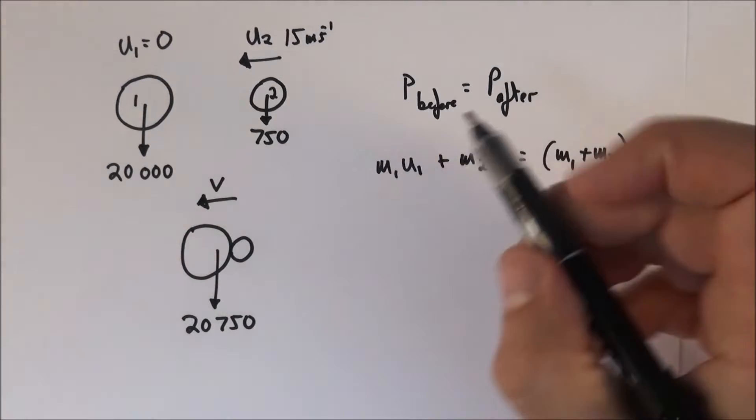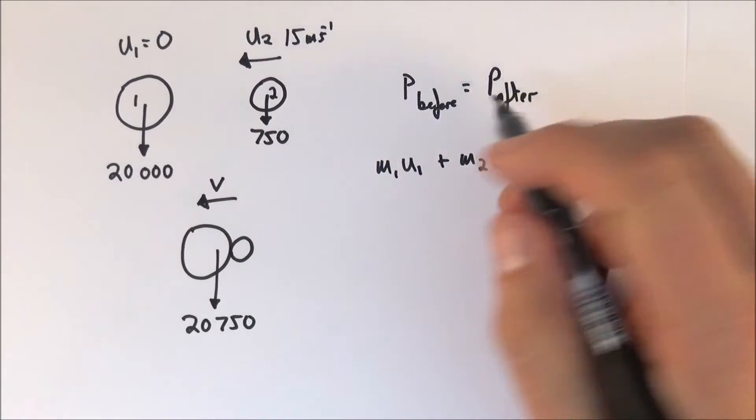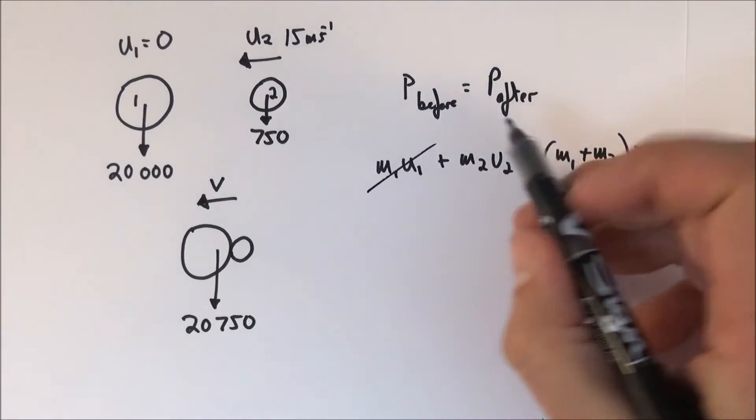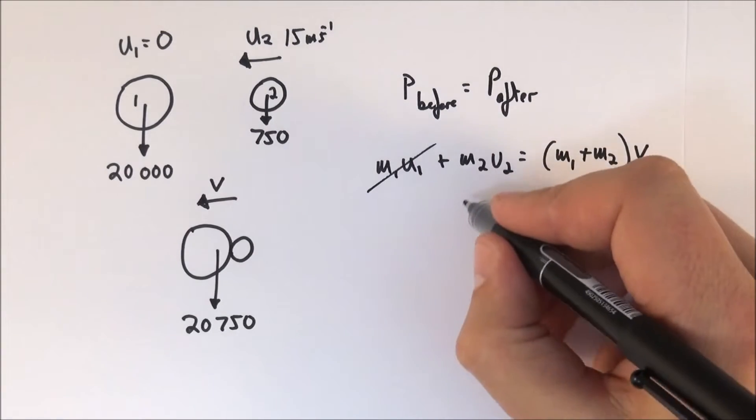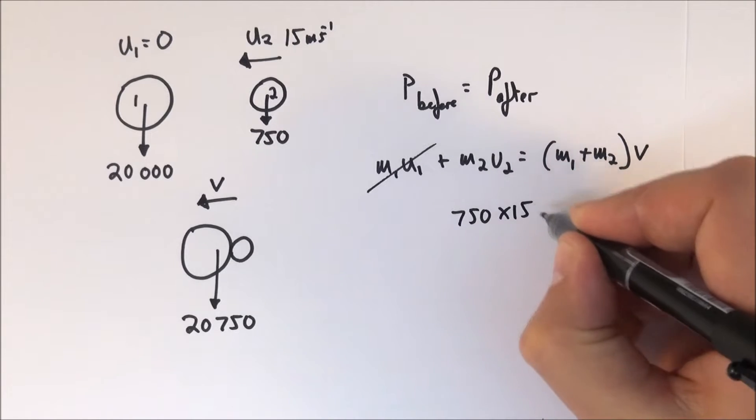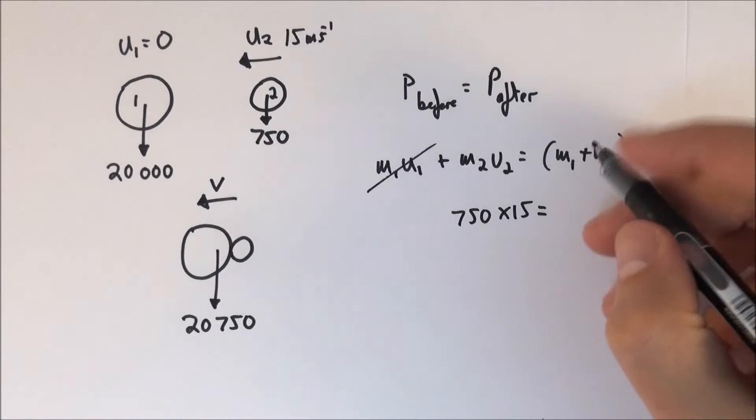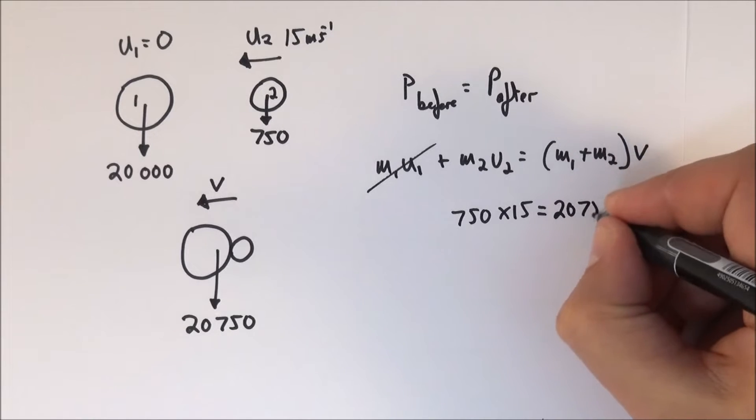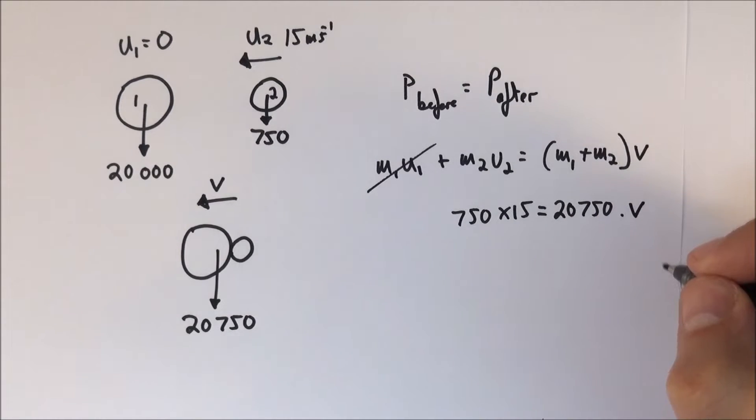So we're going to put the numbers in. First of all U1 is zero so that term becomes zero. The total momentum before is M2 which is 750 multiplied by 15. That's going to equal their combined mass which is 20,750 multiplied by their final velocity.